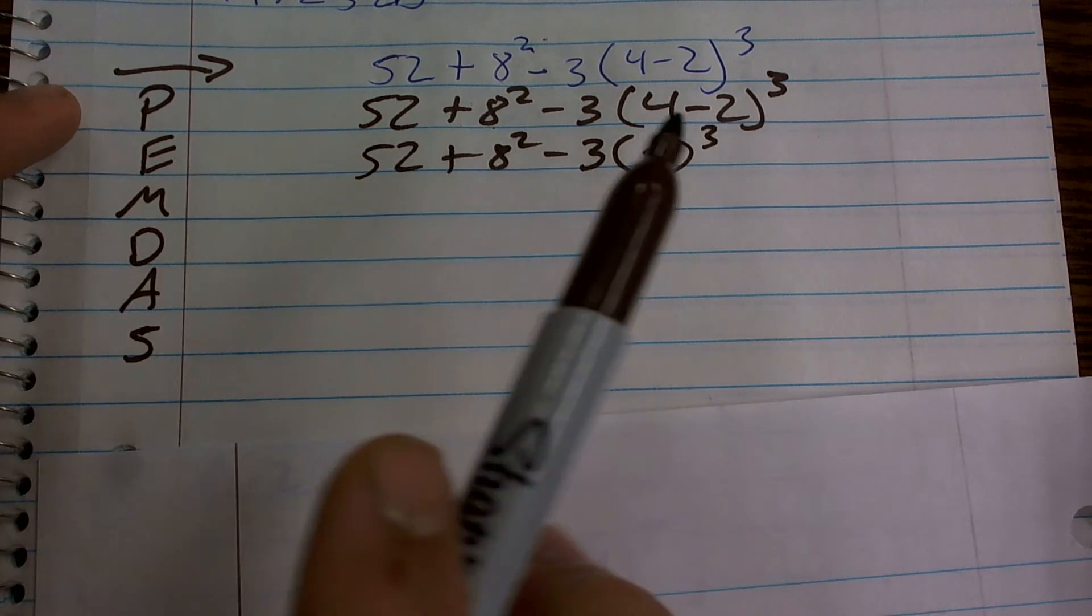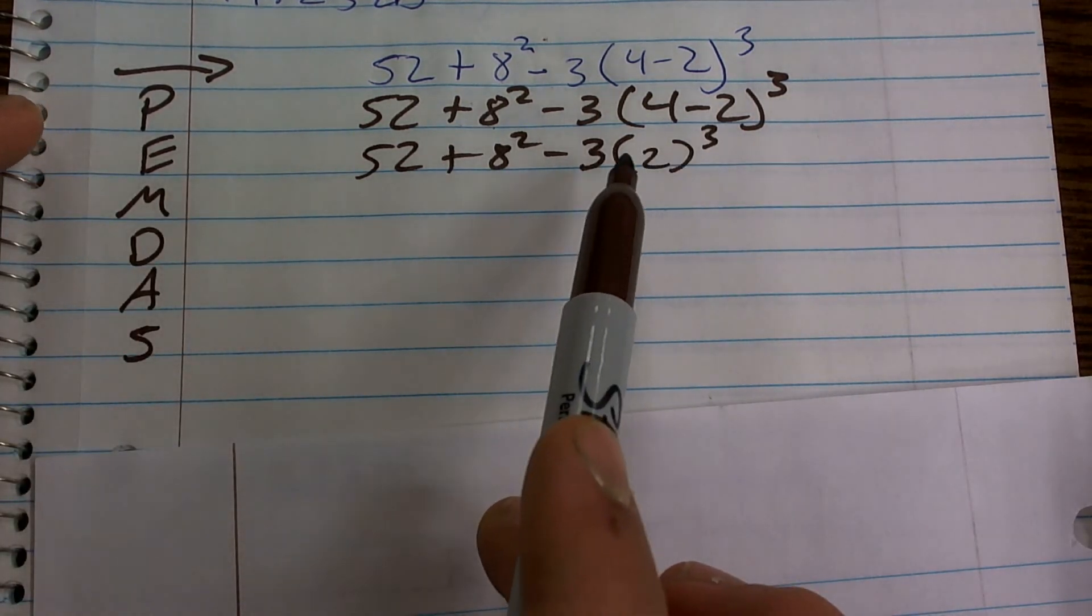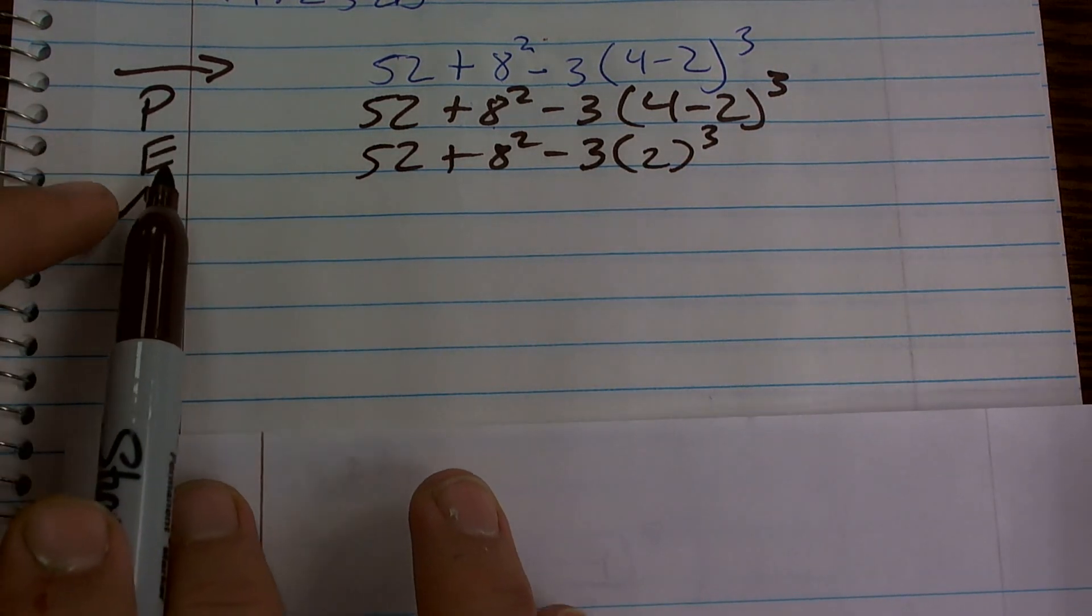Now I have completed my parentheses. There's nothing else. I don't really need to write parentheses in here, but I'm going to keep them there to remind me to use that multiplication. So now I'm going to move down to exponents.